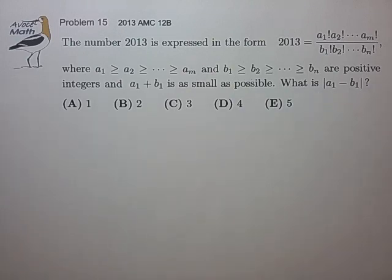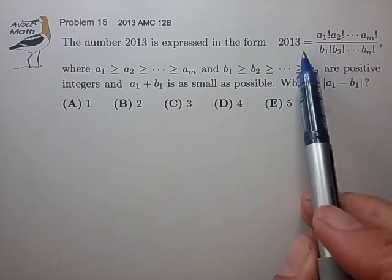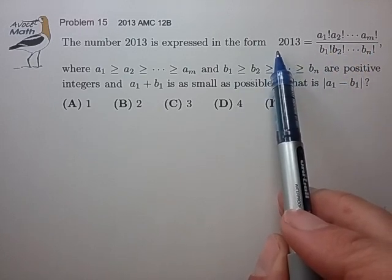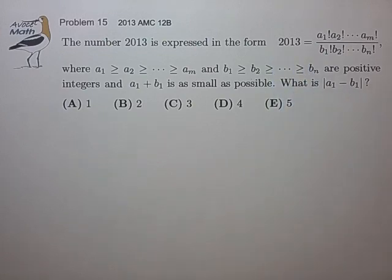Okay, so this looks to be an integer constraint problem. We have integer factors on the top numerator, integer factors on the bottom denominator, and somehow this has to form the number 2013. So the prime factorization of 2013 is definitely going to come into play here.